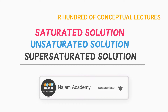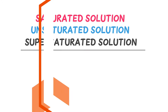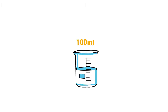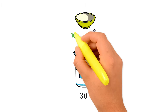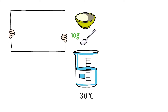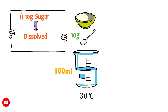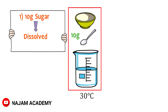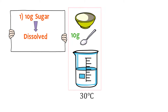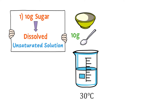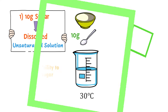What is saturated solution and unsaturated solution? Consider 100 ml water at 30 degrees centigrade. If I add 10 grams of sugar to the water, we know that 10 grams of sugar easily dissolves in 100 ml water. We call this solution of sugar and water an unsaturated solution, because the water or solvent has the ability to dissolve more sugar or solute.